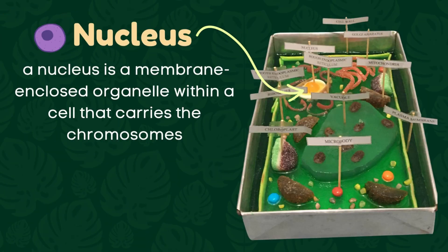Nucleus. A nucleus is a membrane-enclosed organelle within a cell that carries the chromosomes. The edible material we use is an egg-shaped gummy with three layers of colors — white, light orange, and orange — which clearly represent the three layers of a nucleus: the nuclear envelope, nucleoplasm, and the nucleolus.